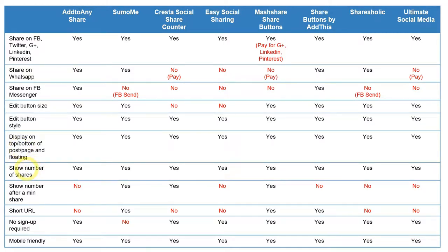You want to show the number of shares as social proof to enhance your article and show how many people are sharing it. But if you don't have many shares, you don't want to show that number — you can always set a minimum number of shares before the count becomes visible.